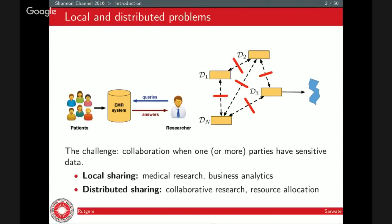What I mean by local and distributed problems: I'm thinking about problems in data sharing. The challenge is that you want to collaborate — you have different parties who want to collaborate when one or more of them have sensitive information. On the left side you might have a hospital with private patient data and a researcher who wants to query that database, or do some analysis. On the right side, you might have multiple institutions sharing data with each other to solve problems like collaborative research.